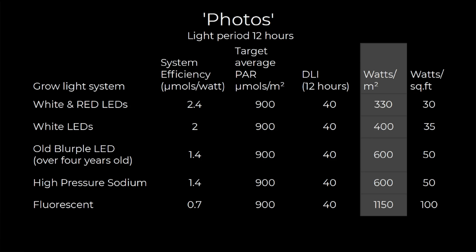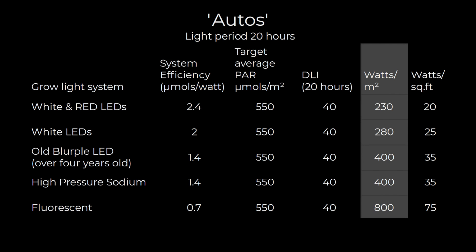With regard to cannabis, growers will typically be growing either photoperiod plants, which would be flowering on a 12-hour cycle, or autoflower plants, for which growers would often have a 20-hour light cycle. Generally, I would recommend a lower average power intensity for autoflower plants because they're growing over a longer day cycle and therefore absorbing more over that longer cycle, hence the lower light intensity recommendation.